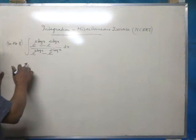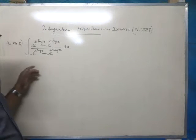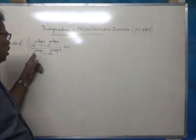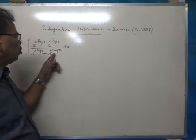Question number 8. Integral e raised to 5 log x minus e raised to 4 log x divided by e raised to 3 log x minus e raised to 2 log x dx.